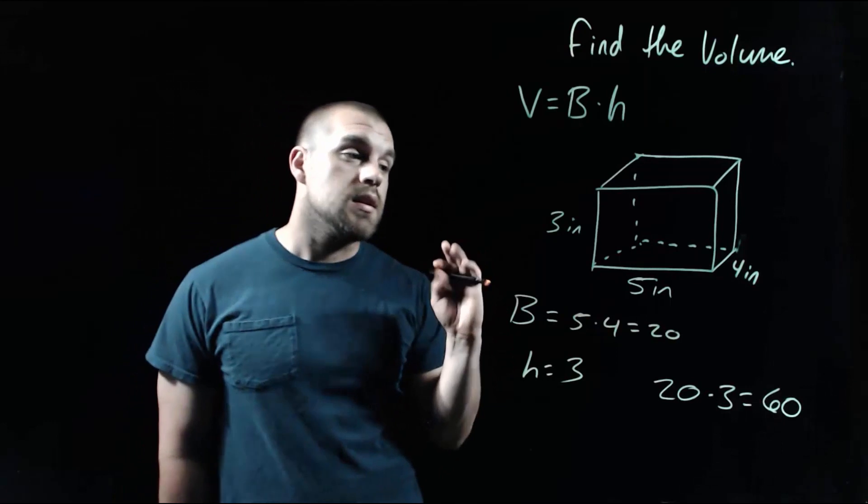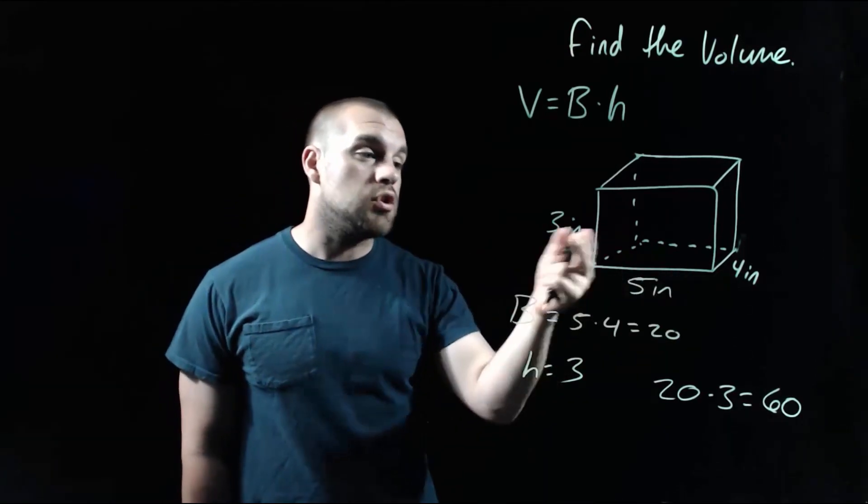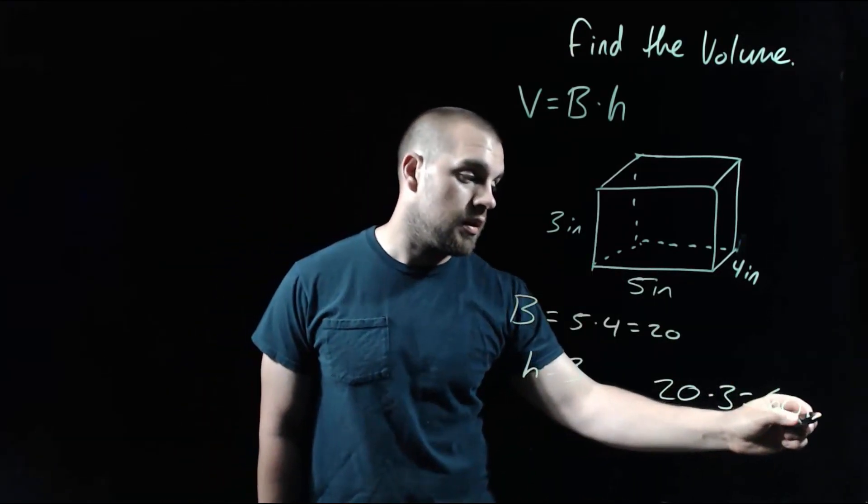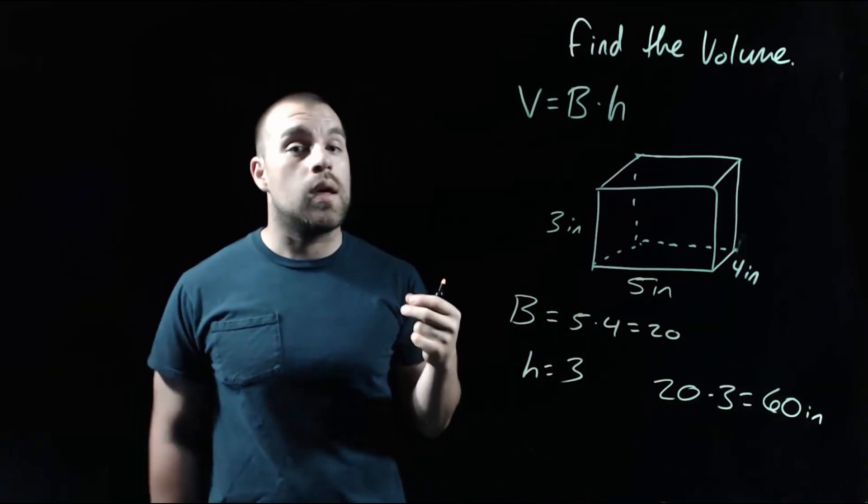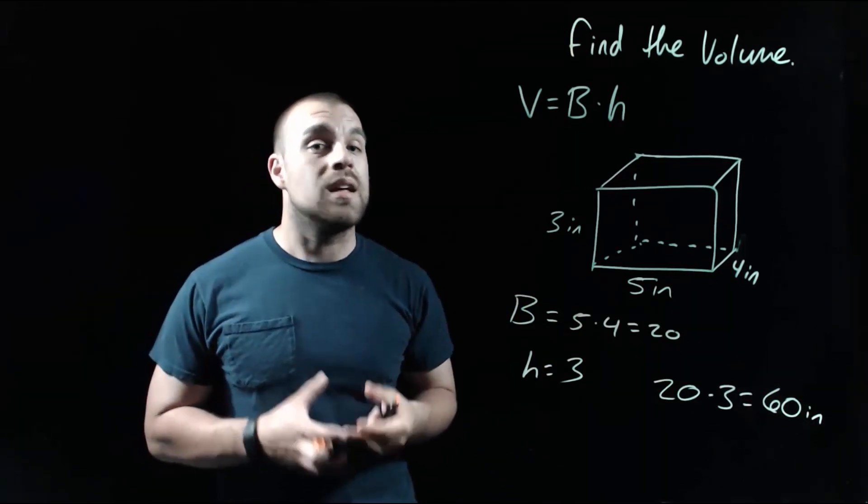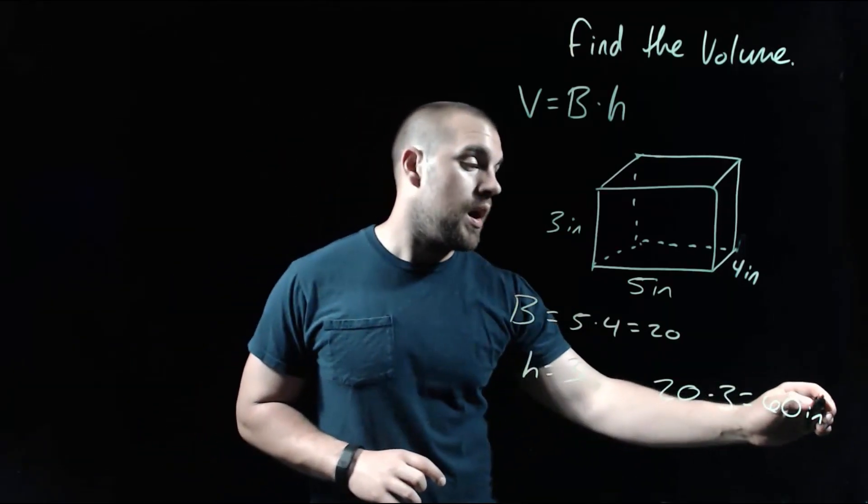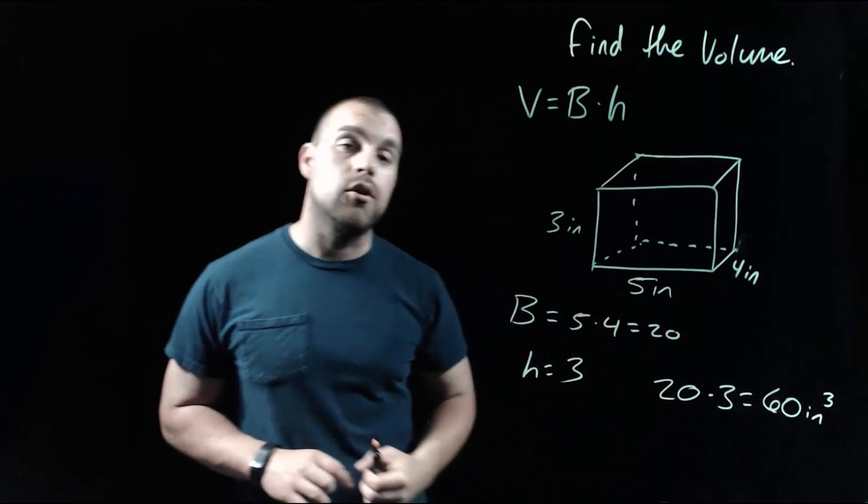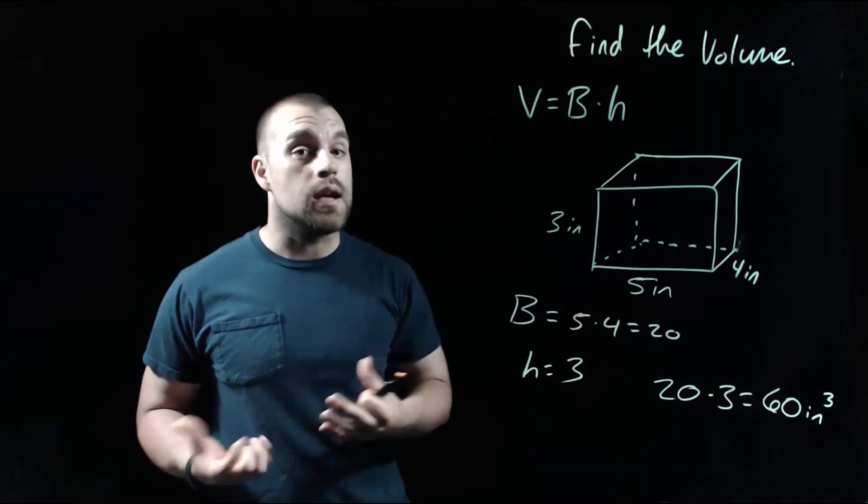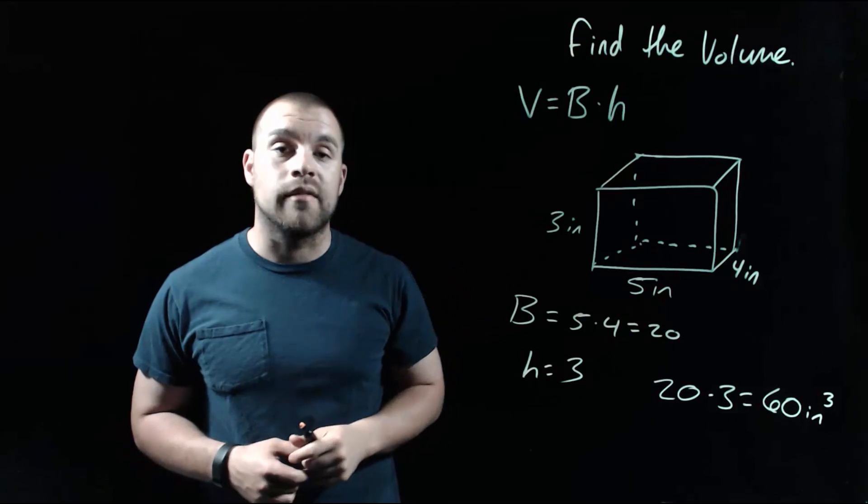Now we do need to throw a label on this. Since we're dealing with inch measurements, we're going to put inches on the end. But as we're dealing with volumes, volume gets cubic units. So on that inches, we're going to put a cubed power. So it's 60 inches cubed as the volume of our prism.